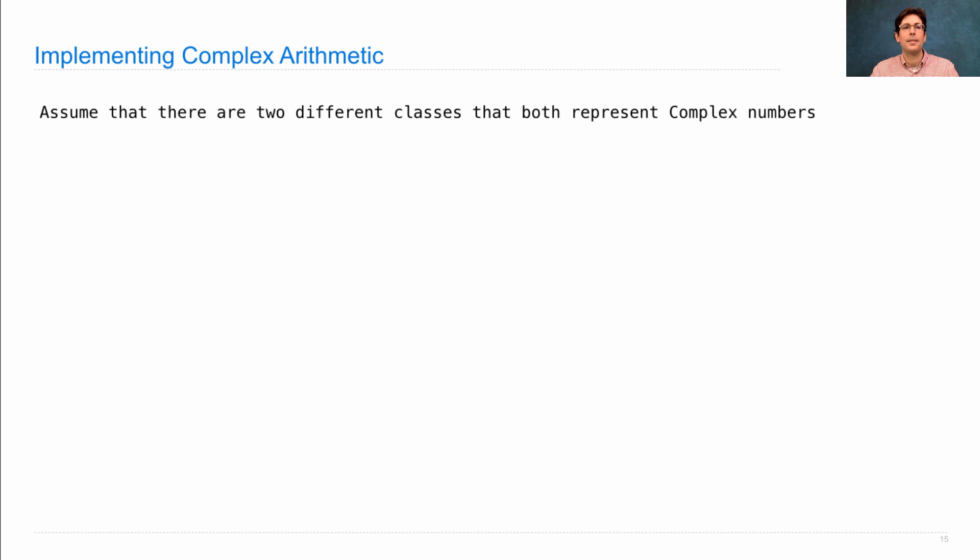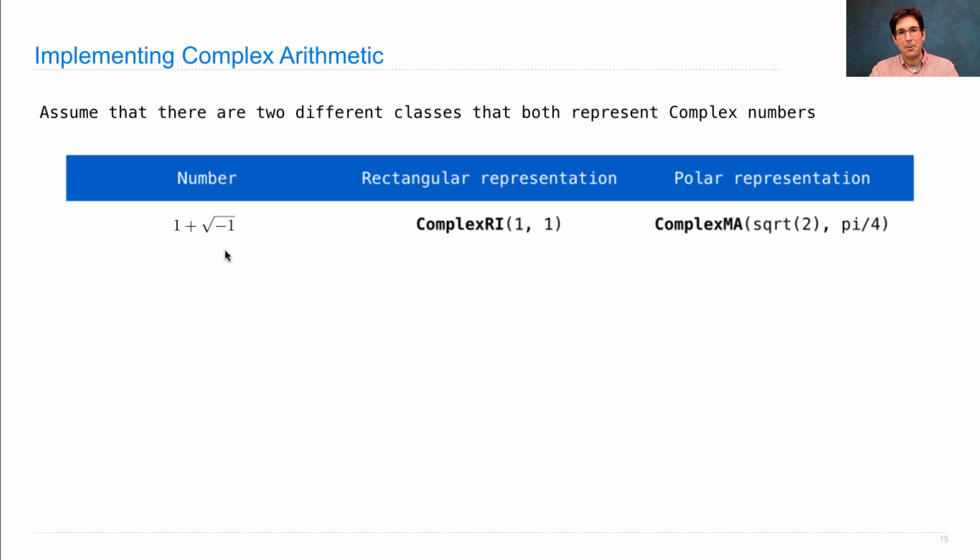In particular, let's say that we have two different classes that both represent complex numbers. So here's a complex number, 1 plus the square root of negative 1, or 1 plus 1i. That's the number, and here are two classes that represent that number in different ways.